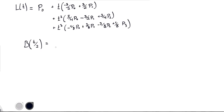So B of T over 2, this one is a lot easier than L of T because we're just sort of using the definition of this with changing T to T over 2. So here we have 1 minus T over 2 cubed P0 plus 3 times 1 minus T over 2 squared times T over 2 P1 plus 3 times 1 minus T over 2 times T over 2 squared P2 plus finally T over 2 cubed P3.